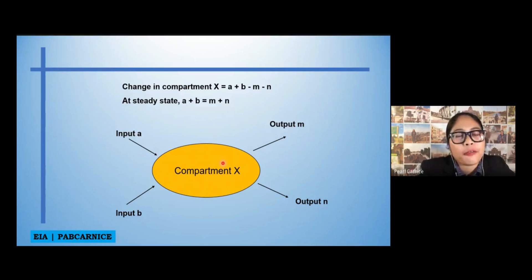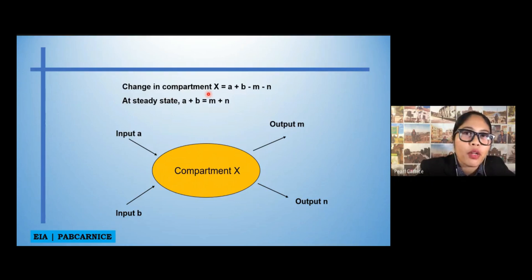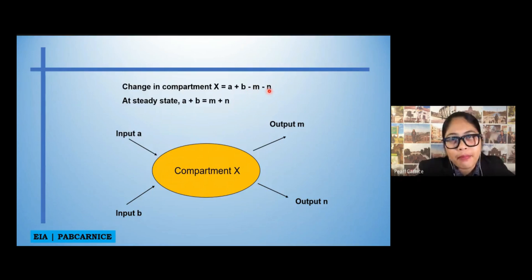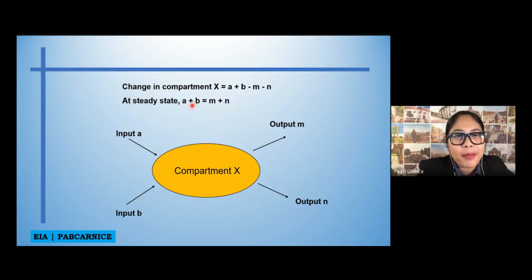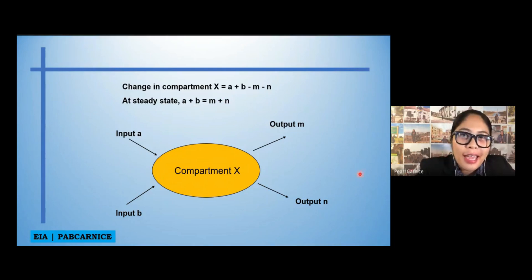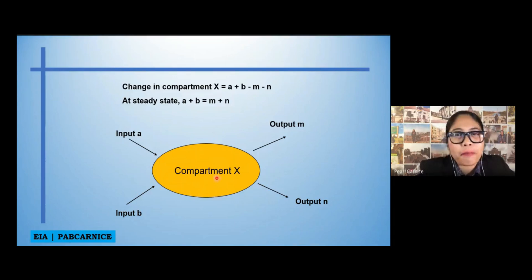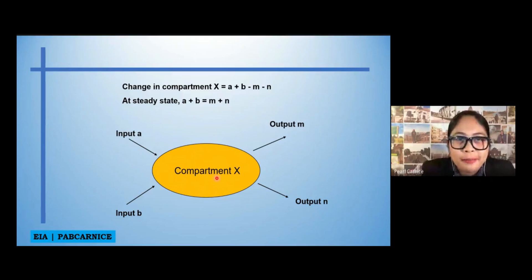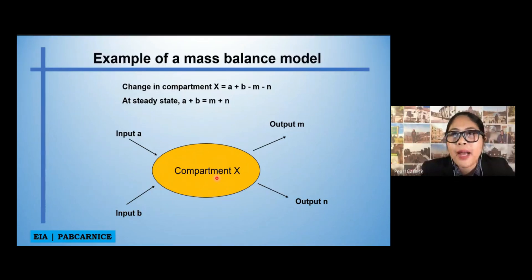The same thing with output M. Change in compartment X would be equal to A plus B, minus output M and output N. At a steady state, if input A plus input B is equal to output M and output N, therefore the volume in compartment X would be steady, or still equal to the original state. That's the mass balance model.